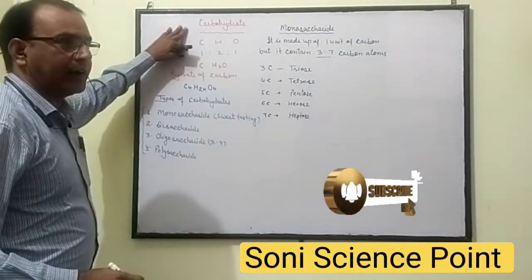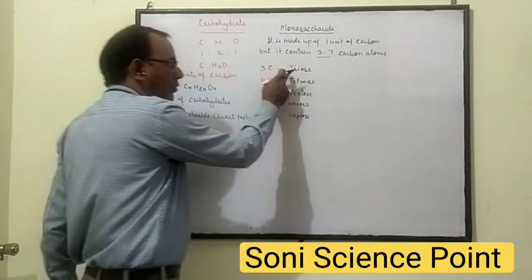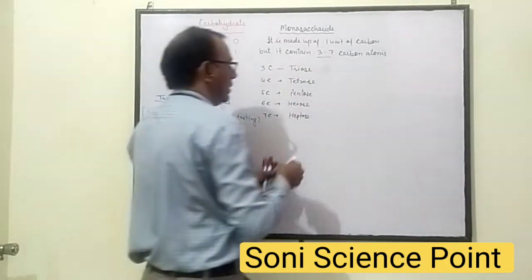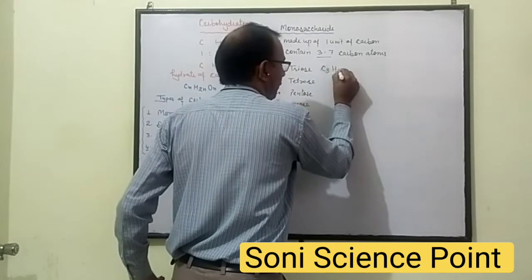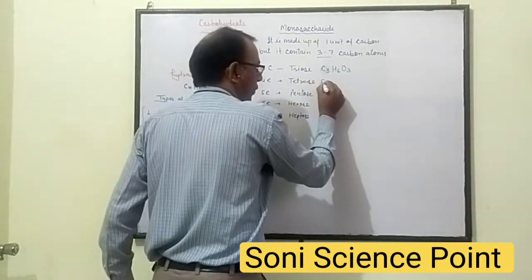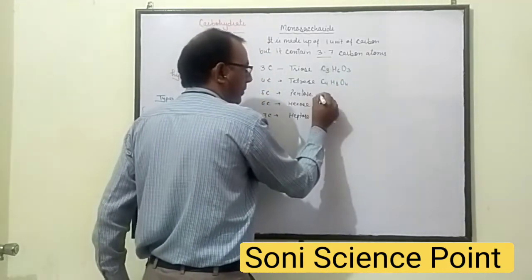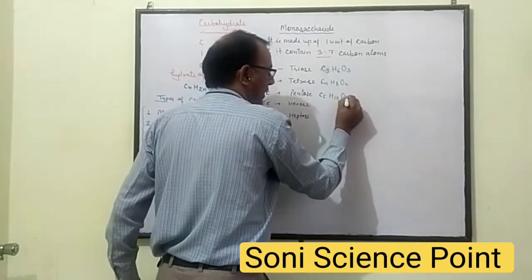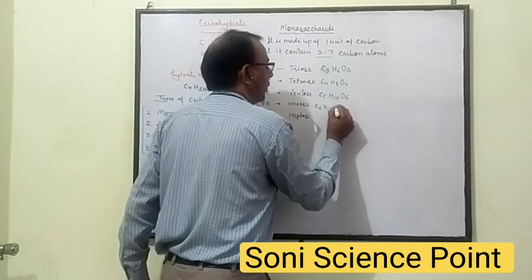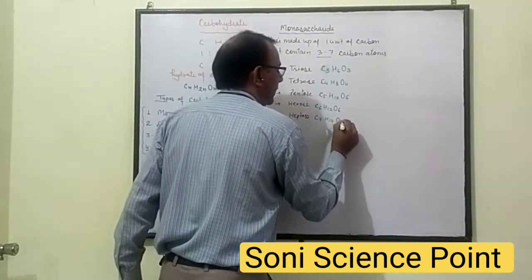In Carbohydrates, Carbon, Hydrogen, and Oxygen are always combined in the ratio 1:2:1. So Triose (three carbons) has the formula C3H6O3; Tetrose has C4H8O4; Pentose has C5H10O5; Hexose has C6H12O6; and Heptose has C7H14O7.